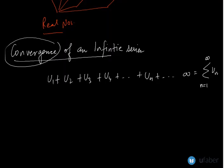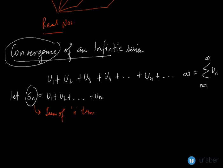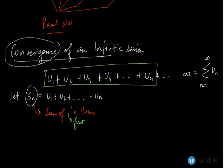Let Sn equal U1 plus U2 up to Un. What is Sn? Sn is basically the sum of n terms. So Sn is the sum of not just any n terms, but the sum of first n terms. So it is from U1 to Un, the n terms which appear first in the given series.